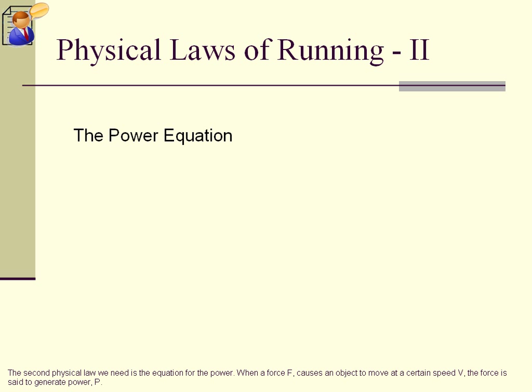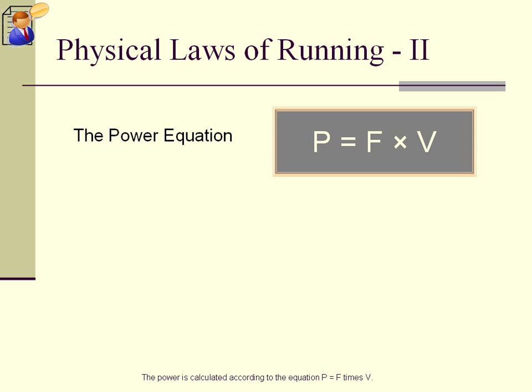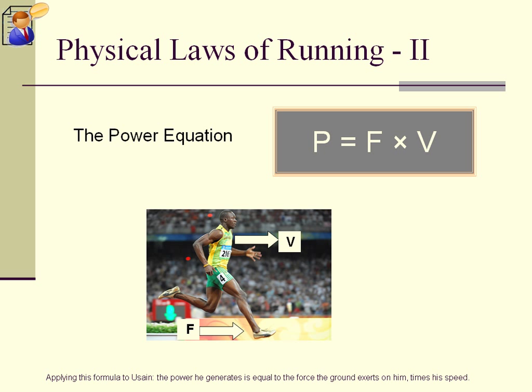The second physical law we need is the equation for the power. When a force F causes an object to move at a certain speed V, the force is said to generate power, P. The power is calculated according to the equation P equals F times V. Applying this formula to Usain, the power he generates is equal to the force the ground exerts on him times his speed.